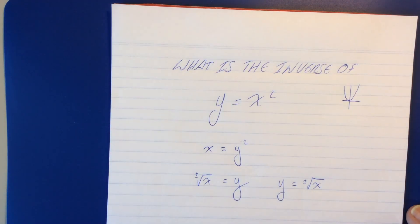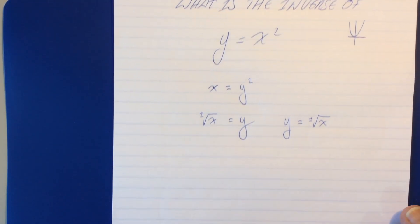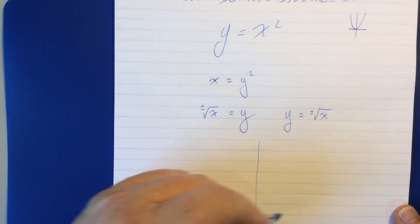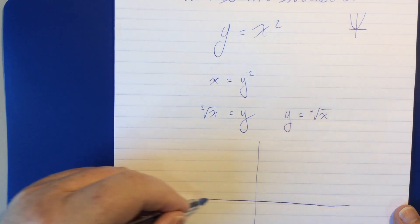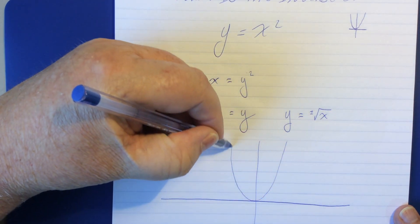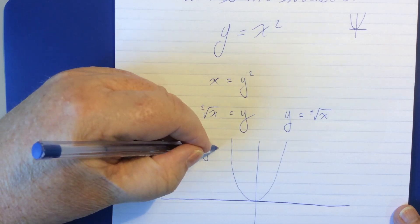And what is that graph like? Well, let's do this. So, here's our original function, y equals x squared.